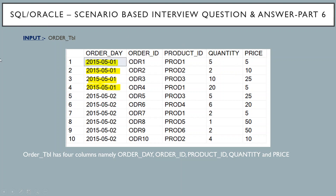So let's start. In the previous video, I have already explained about the order table. This table contains the order ID column, product ID, quantity, and price. Basically, this table contains two days' data — first May data, which is highlighted with yellow, and the second May data without the highlighted ones. So now we will go straight to the problem statement.